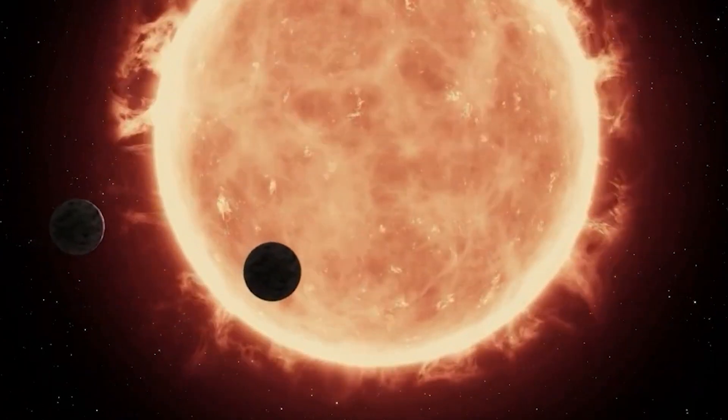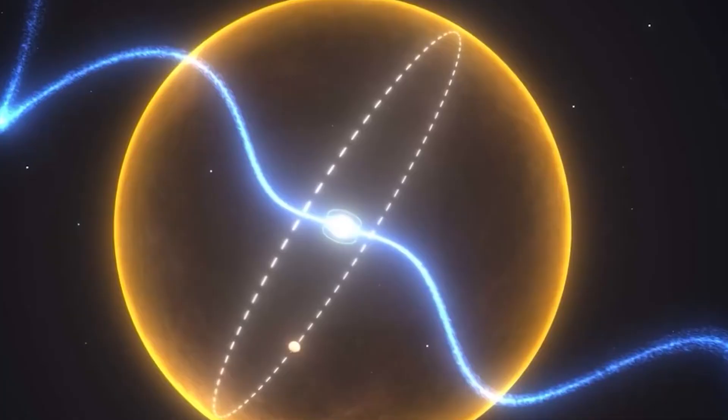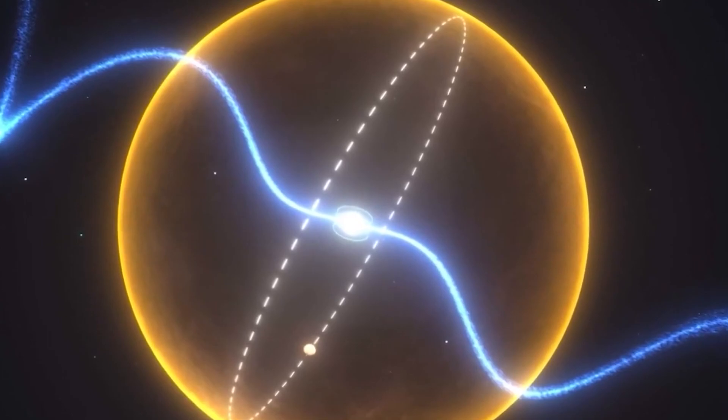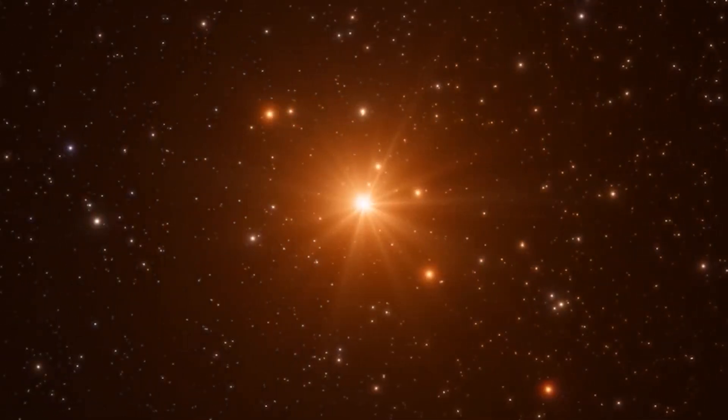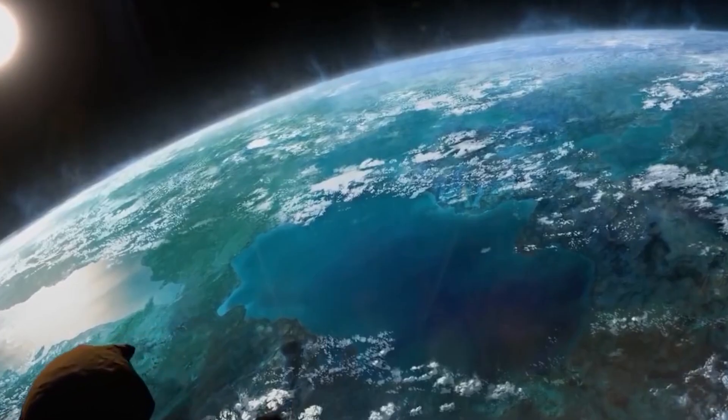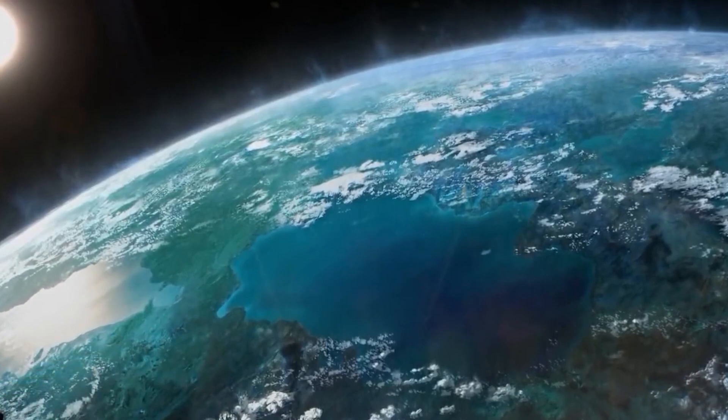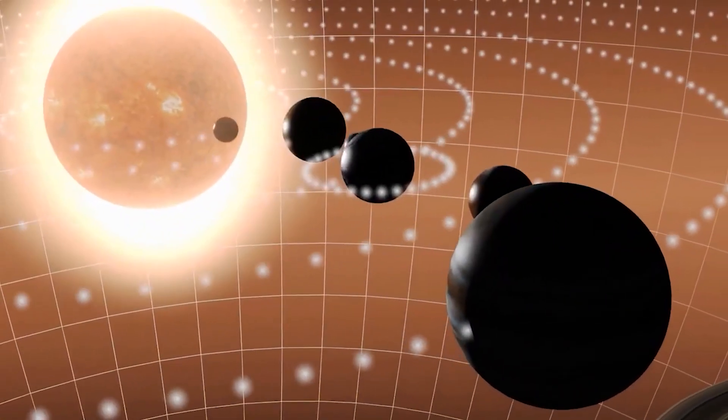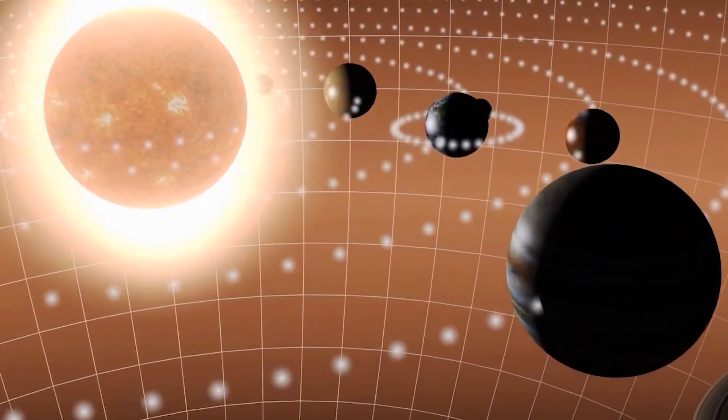With Proxima Centauri, we are dealing with a red dwarf star that is way smaller and colder than Earth's sun. An important point to note is that Proxima Centauri is part of a group of three stars that seem to share the same gravitational pull on each other.